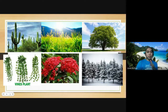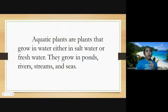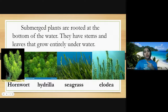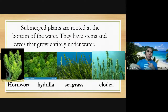Aquatic plants are plants that grow in water, either in salt water or fresh water. They grow in ponds, rivers, streams, and seas. There are different types of aquatic plants. First are submerged plants — these are rooted at the bottom of the water and have stems and leaves that grow entirely underwater, such as hornwort, hydrilla, and seagrass.